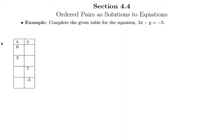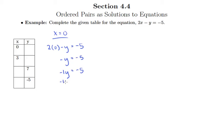We'll start with x equals 0 and figure out what y should be to make it a solution. We take our equation, plug 0 in for x, and solve for y. Of course 2 times 0 is 0, so we have negative y equals negative 5. Remember that negative y is the same as negative 1 times y. We can solve for y by dividing by negative 1 — or multiplying by negative 1, since negative 1 times itself is positive 1. Either way, we get y equals 5, so I can fill in y equals 5 in this table.